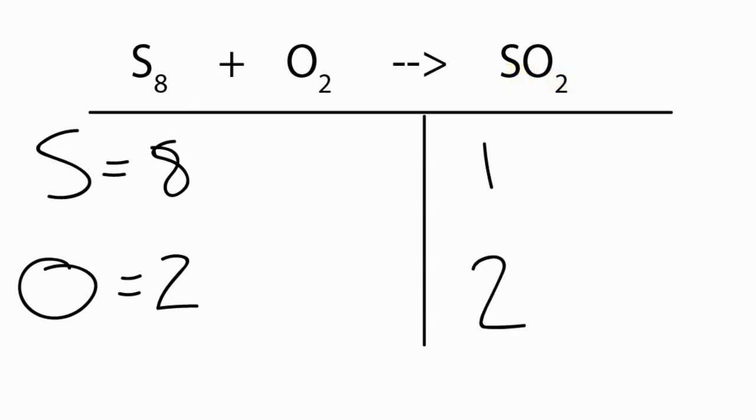So the oxygens are okay, the sulfur atoms aren't balanced. Well to fix that, we could just take and put an eight right here, and now we have one times eight, that gives us eight sulfurs, which is what we want.